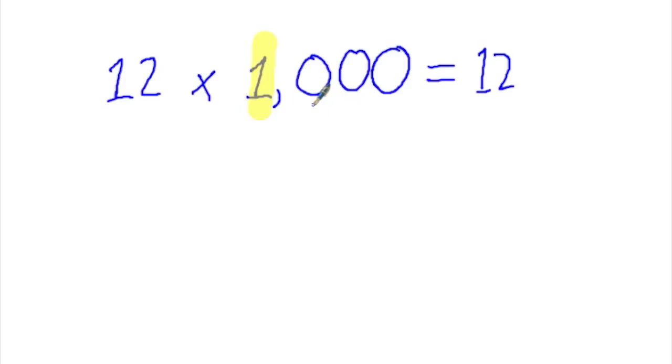Count the zeros for step 2. 1, 2, 3. And put them on the end of your answer. 12 times 1,000 is 12,000.